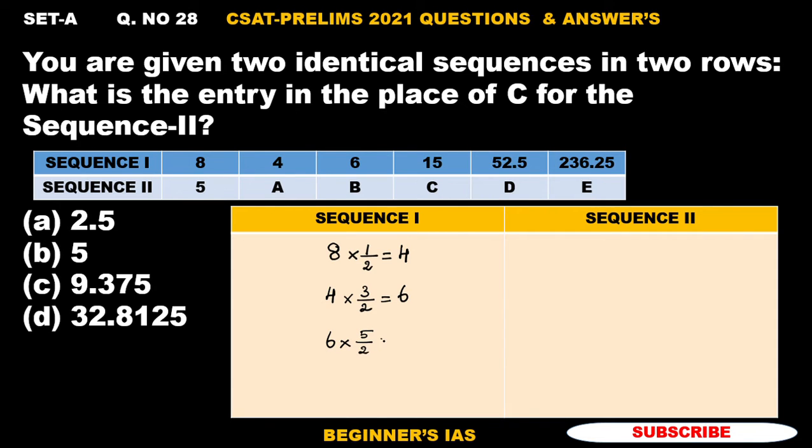With this information we can identify the value of C, but let me check further. 15 into 7/2 gives 52.5. Yes, and then 52.5 into 9/2 gives you a result as 236.25. But we need this one here, we need to check.